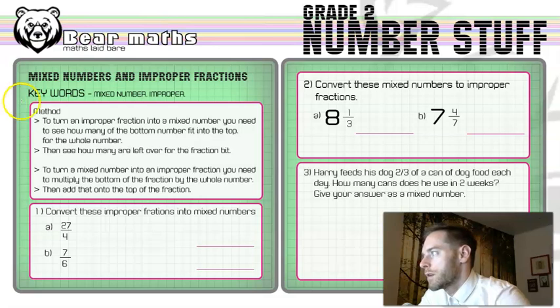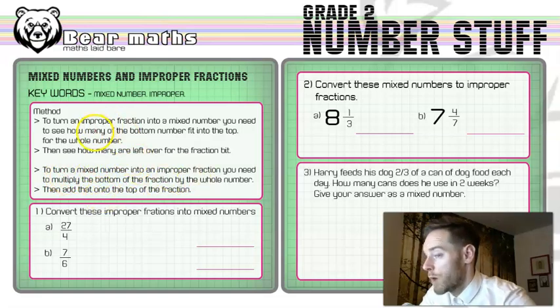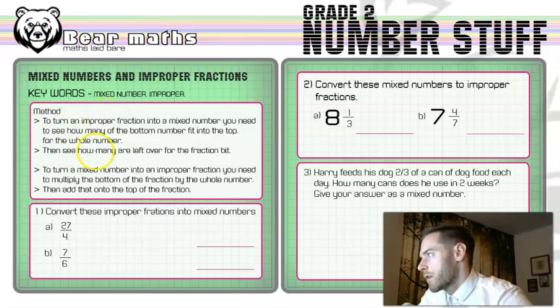Now I've got a method, there's two methods here. The first part of the method is for improper to mixed and then the other way around is the second part of the method. Now question number one is turning improper fractions into mixed numbers.